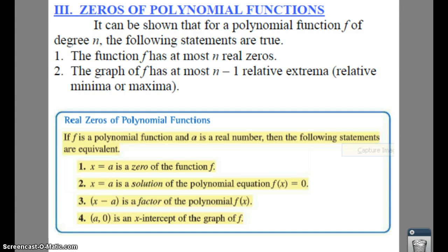And at most n minus 1 relative extrema. That means if you have a degree of 4, then you would have 4 minus 1. 4 minus 1 is going to be 3.